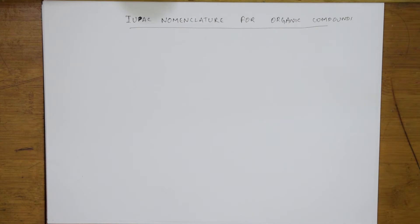What chapters do you have? You have haloalkanes, haloarenes, alcohols, phenols and ethers, and aldehydes, ketones and carboxylic acids and amines. I will be doing all the nomenclature of all four chapters, and in these four days you can complete it — it will be a thorough revision for your board exams.